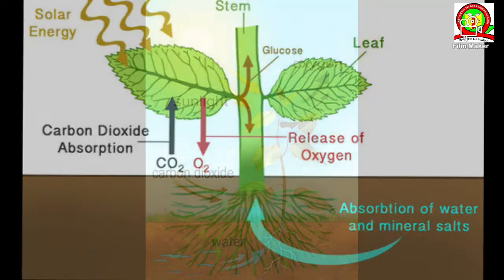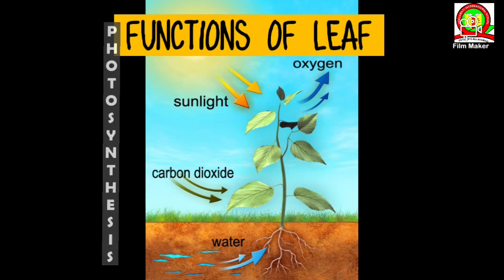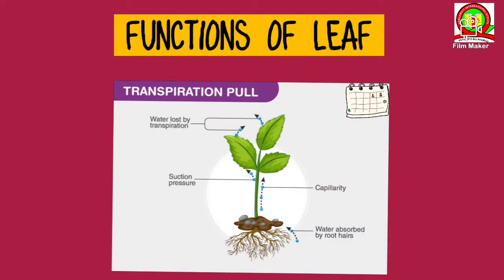Do you know photosynthesis is the main source of oxygen on earth? The second function of a leaf: besides making food, the leaves perform other tasks too. The leaves are full of tiny openings which are called stomata. The stomata are used to exchange gases with the environment, like absorbing the carbon dioxide and releasing the oxygen gas. The plants also release water vapours by the transpiration process through the stomata. Transpiration helps the plants to cool down.